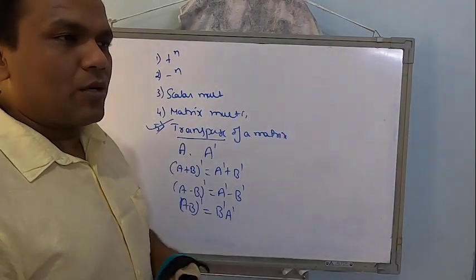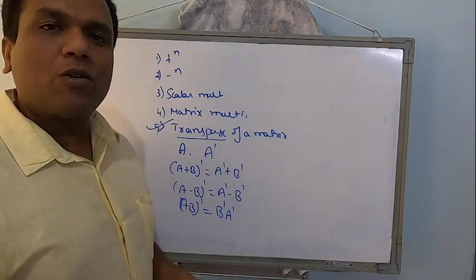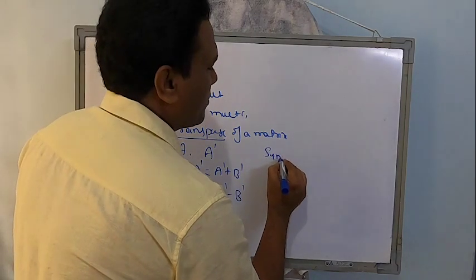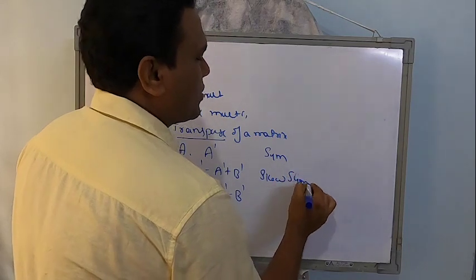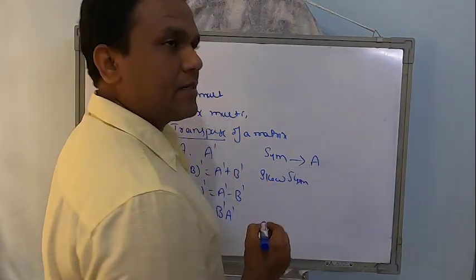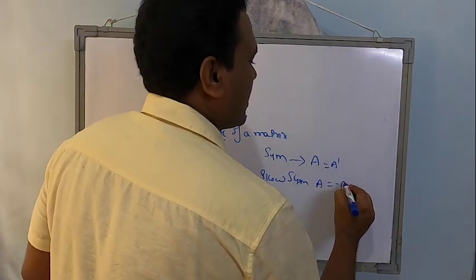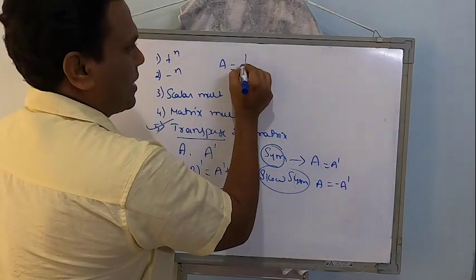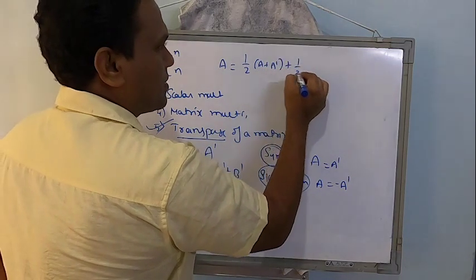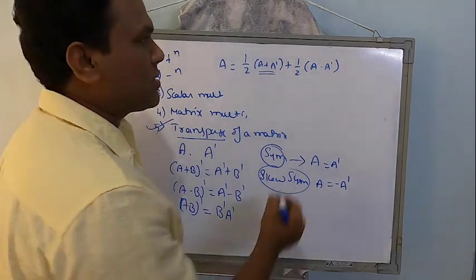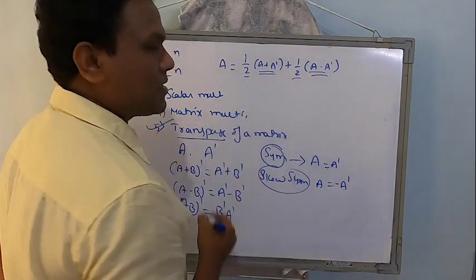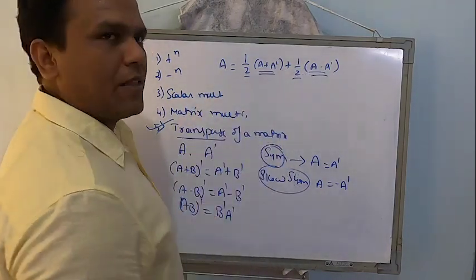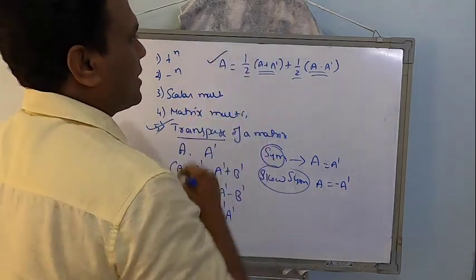Today we concentrate on NCERT exercise problems based on transpose. In transpose, we have definitions: a matrix is symmetric if A = A', and skew-symmetric if A = -A'. Every matrix can be written as the sum of a symmetric and a skew-symmetric part: half of (A+A') plus half of (A-A').